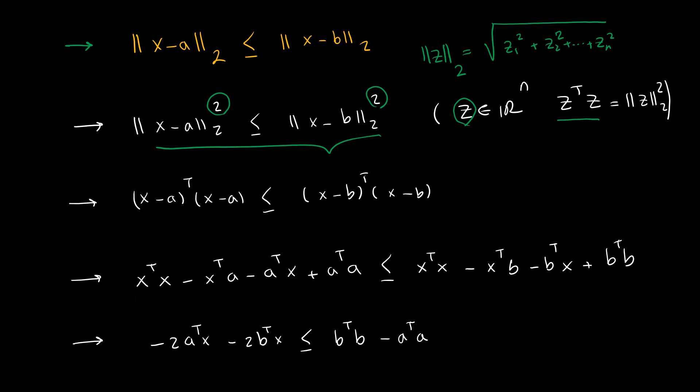Now if I use this formula as the inner product, I get this for the left hand side and this for the right hand side. Now expand this, so we get x times x and x transpose times a and a transpose times x and a transpose times a.